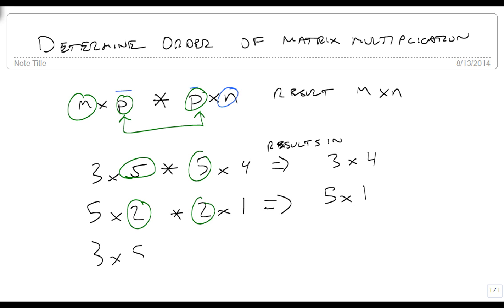Now if I try to do a 3 by 5 times a 2 by 1, these don't match. 5 doesn't match 2, so this has no result. You cannot multiply these matrices together. The rows in one have to match the columns of the other. The columns from this one has to match the number of rows from this one, or it will not work.